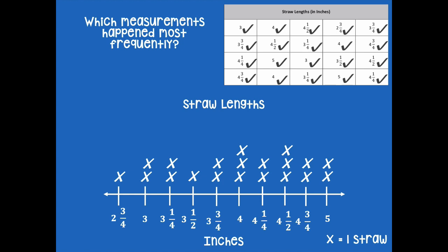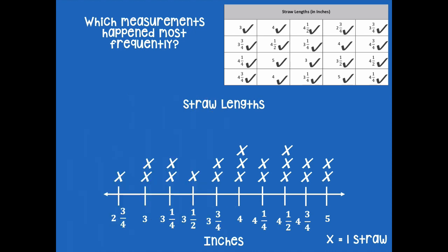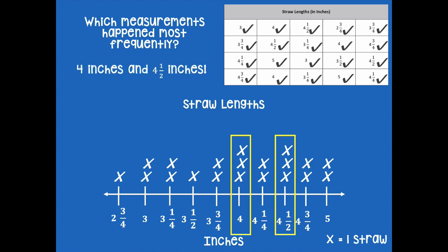Which measurements happened most frequently? Remember, more X's means it happened more often. Pause the video, find out which measurements happened most frequently, and then click play when you're ready. I have three X's in one part of my line plot and three here as well — so four inches and four and a half inches happened most frequently.